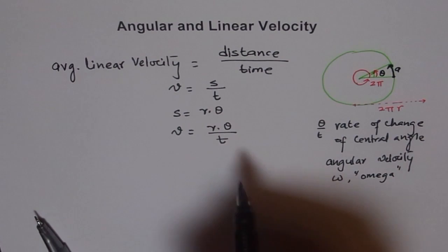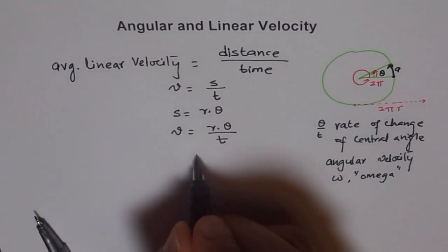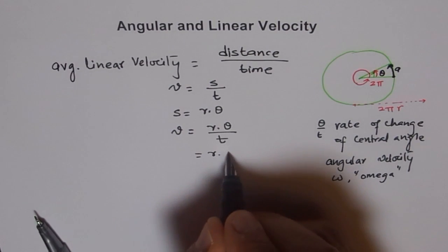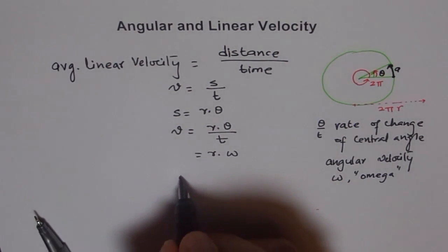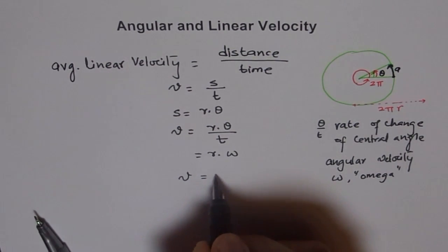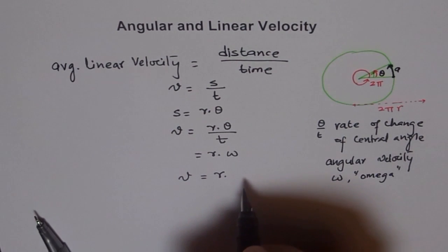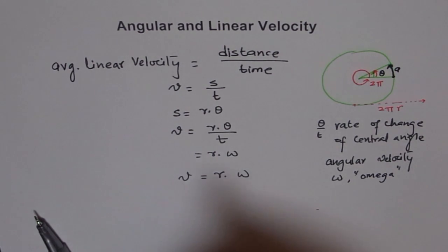We can replace θ by t as ω and we say v equals r ω. So that's the relation which we are looking for. v equals r ω, where v is the linear velocity, r is the radius of the circular path, and ω is the angular velocity.